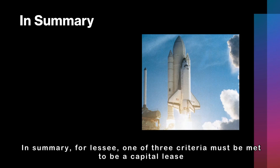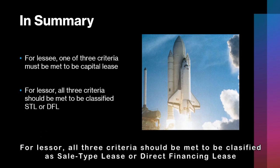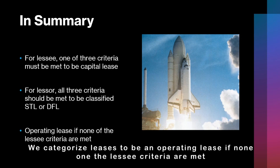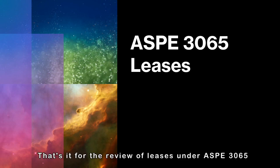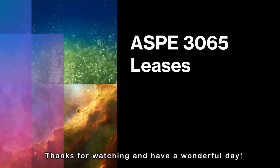In summary, for leasing, one of three criteria must be met to be a capital lease. For the lessor, all three criteria should be met to be classified as a sale type lease or direct financing lease. We categorize leases as an operating lease if none of the leasing criteria are met. That's it for the review of leases under ASPE 3065. I hope this lesson was helpful for your studies and gave you a direction on tackling leases. Thanks for watching and have a wonderful day.